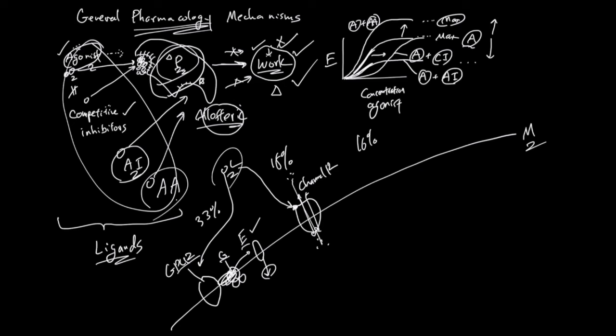The next category — about 16% of pharmaceuticals today — targets cytosolic receptor proteins. These are proteins inside the cell. A ligand can go through the membrane and bind to this protein, activating it, and it will usually directly do the job.